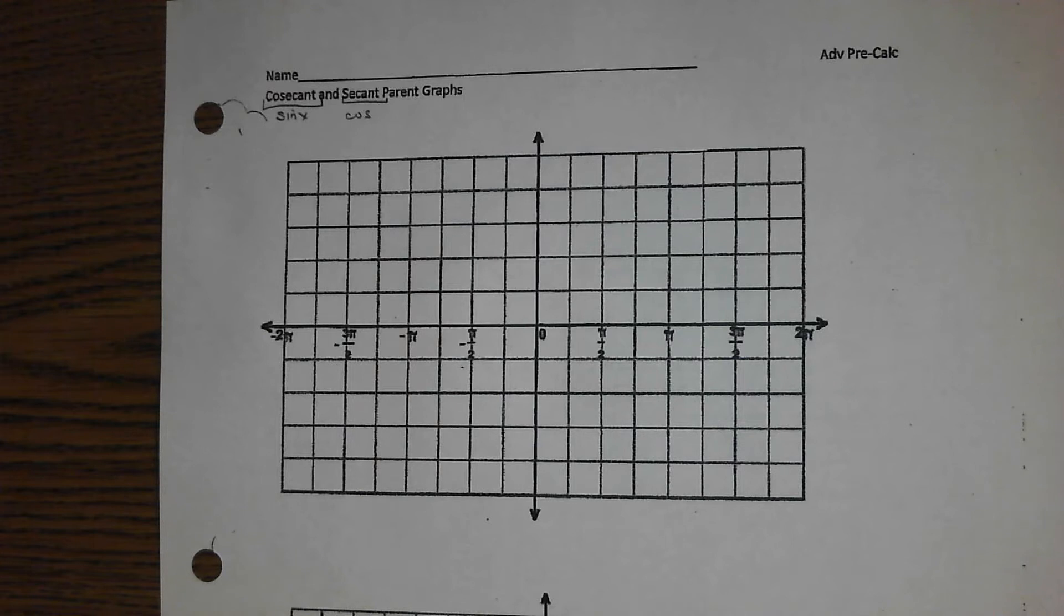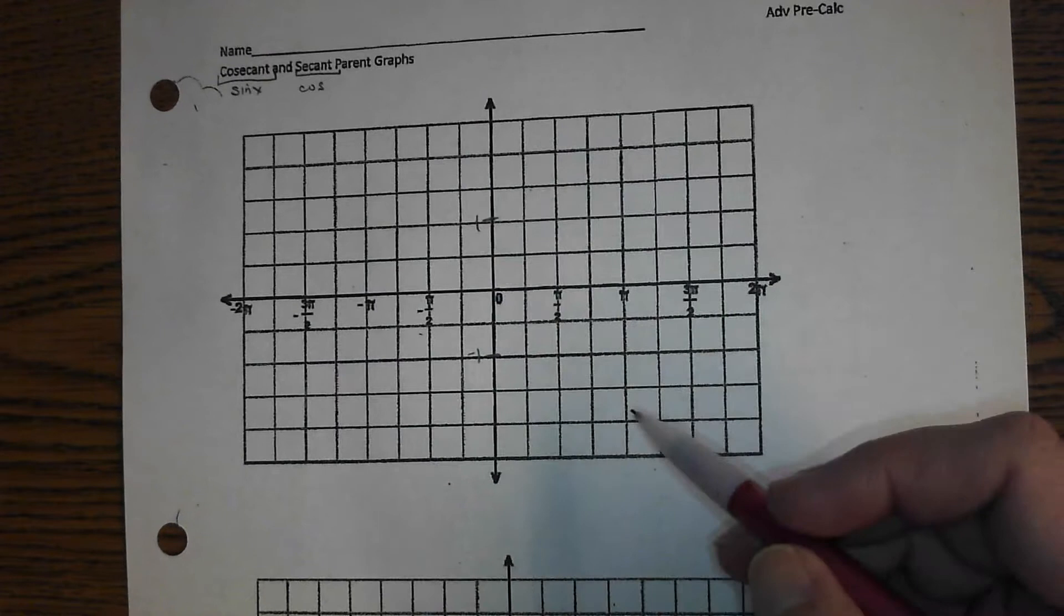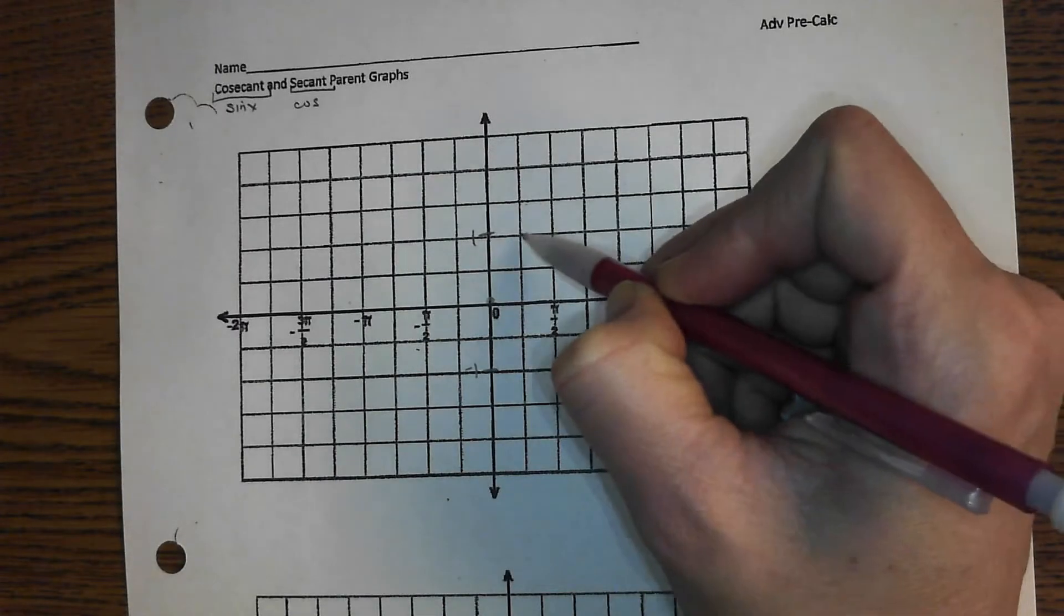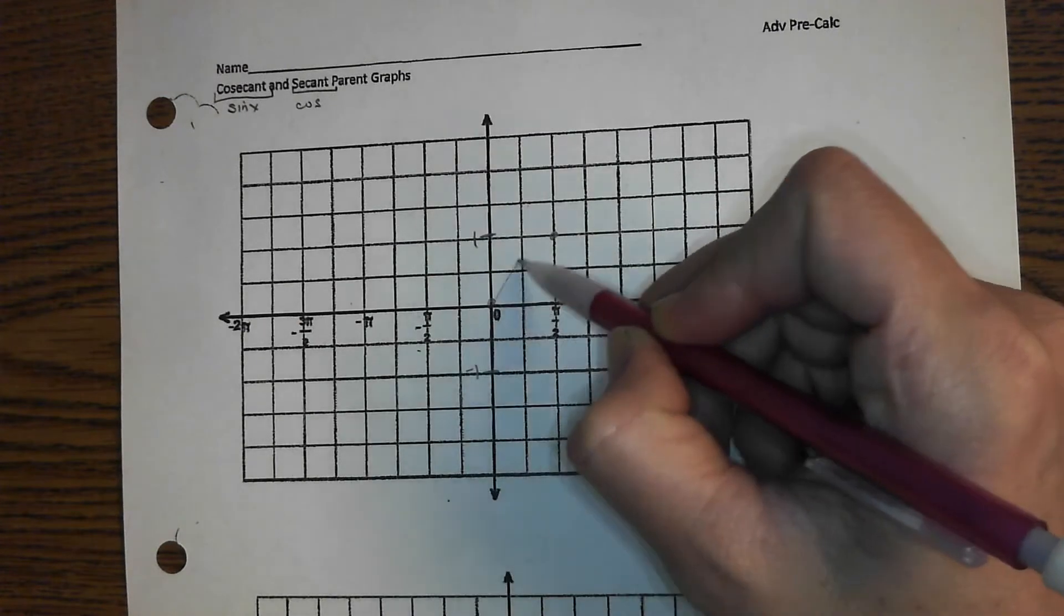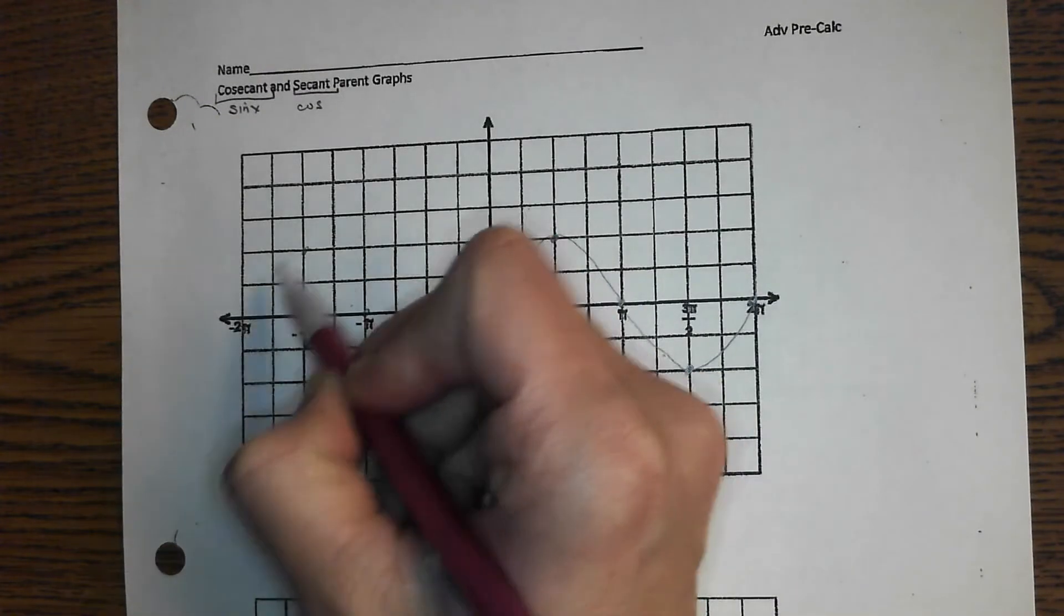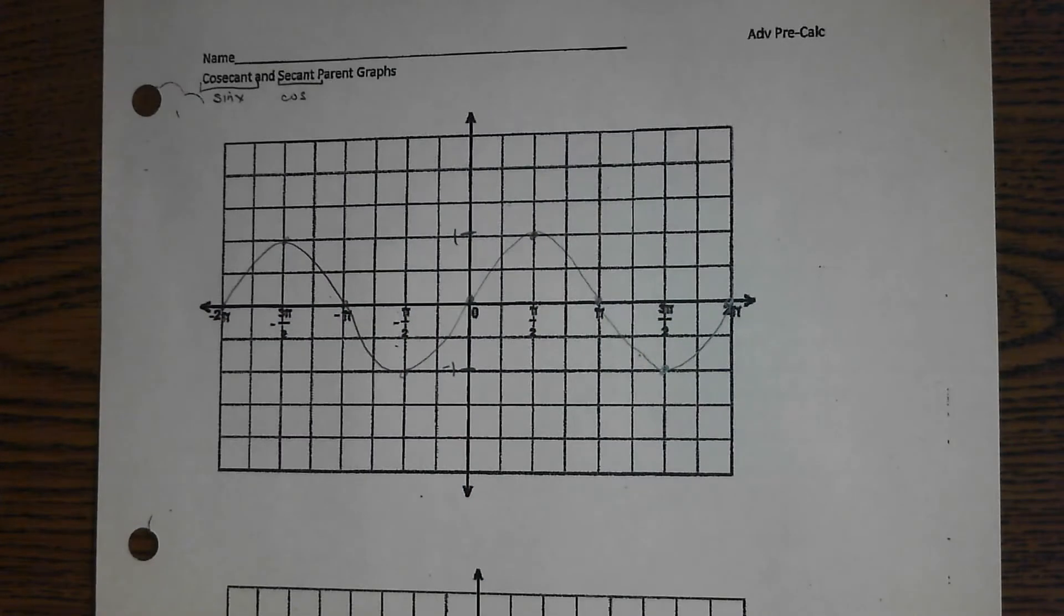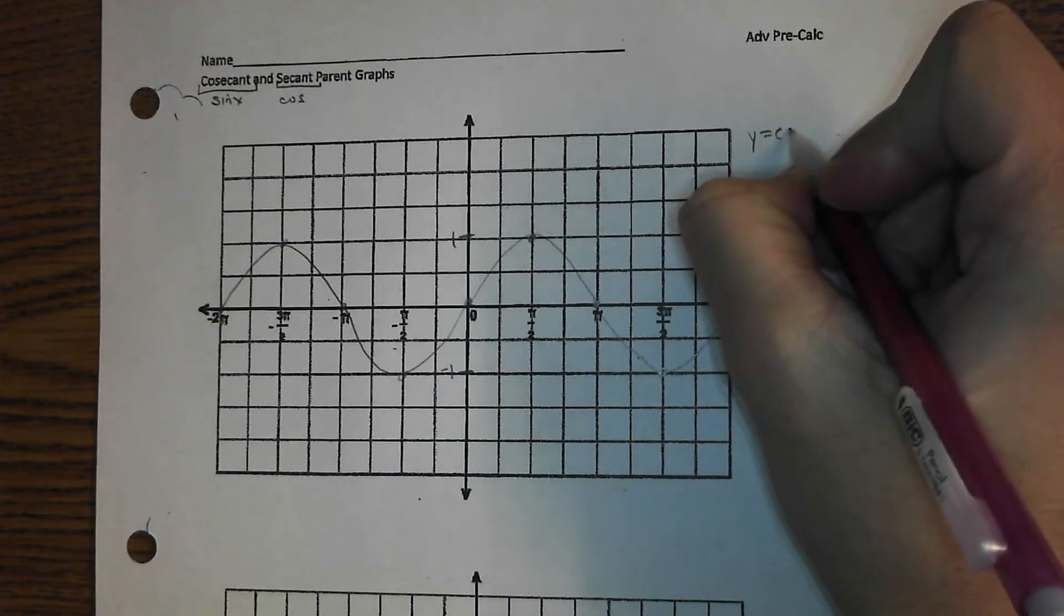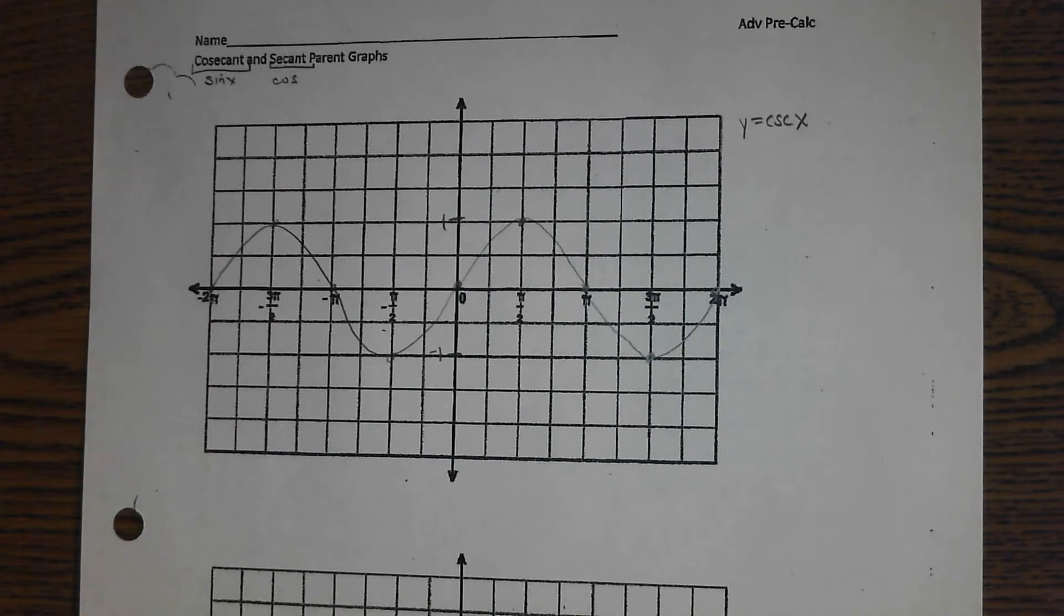So I'm going to sketch those in quickly. I'm going to mark this as 1, and this is negative 1. My sine parent graph we should be able to sketch pretty quickly at this point. I'm just going to write down that this is y equals cosecant x. We're going to erase that, or at least roughly erase that eventually, but this is our guide.